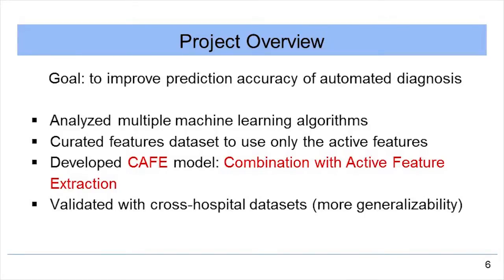We address these limitations in our study to improve the tumor diagnosis accuracy. We do this by first analyzing multiple machine learning algorithms. We created our features dataset to eliminate the redundant features and use only the important active features. We developed our CAFE model — combination of algorithms with active feature extraction — and finally validated our model with cross-hospital datasets, ensuring its generalizability.